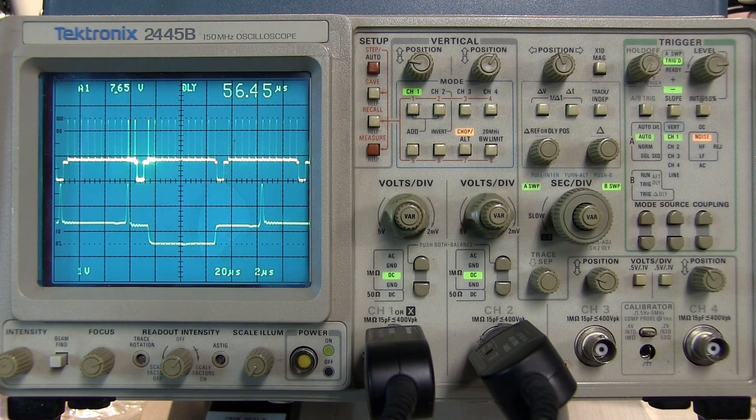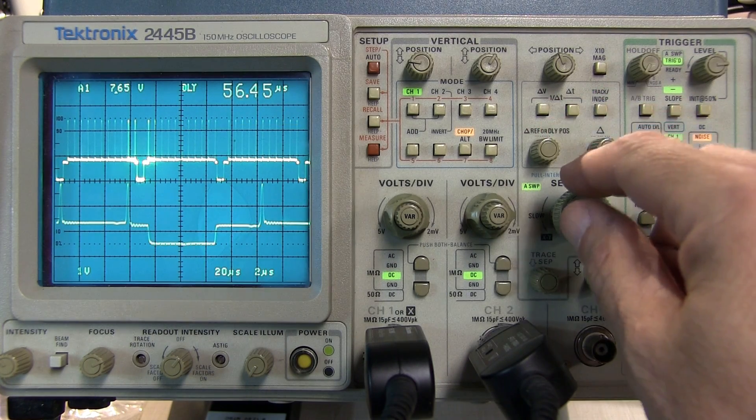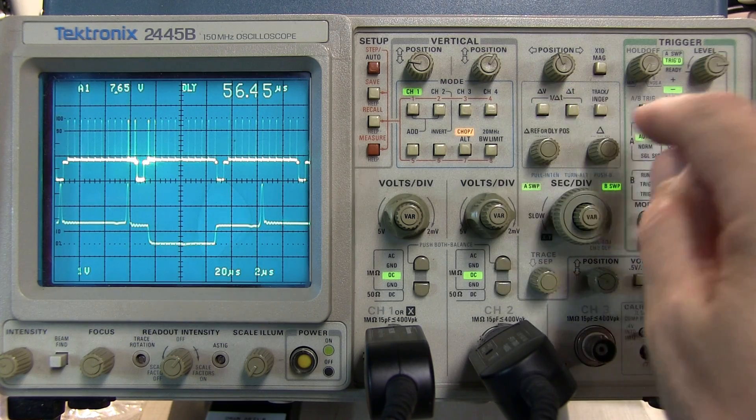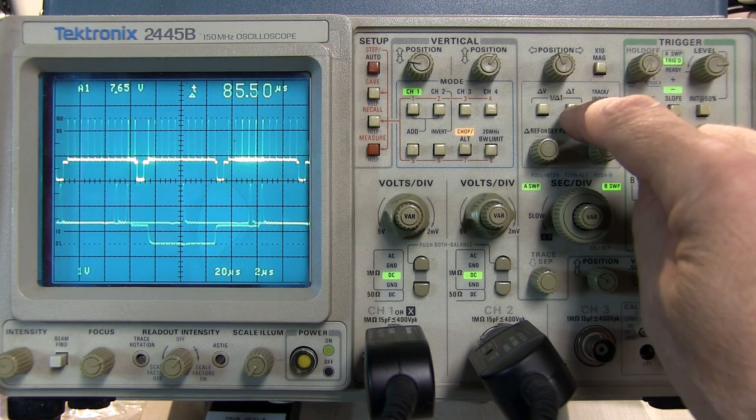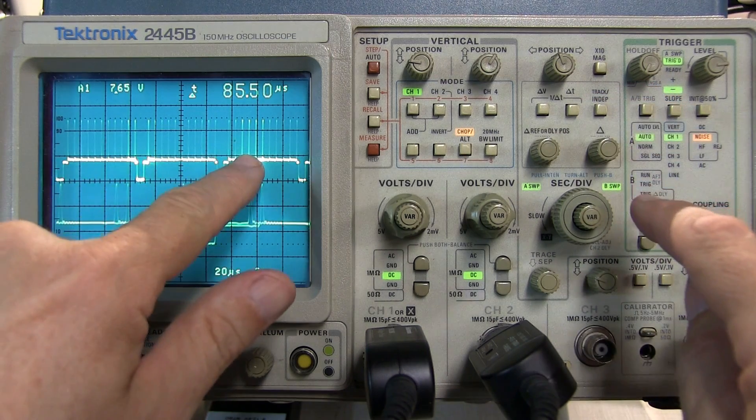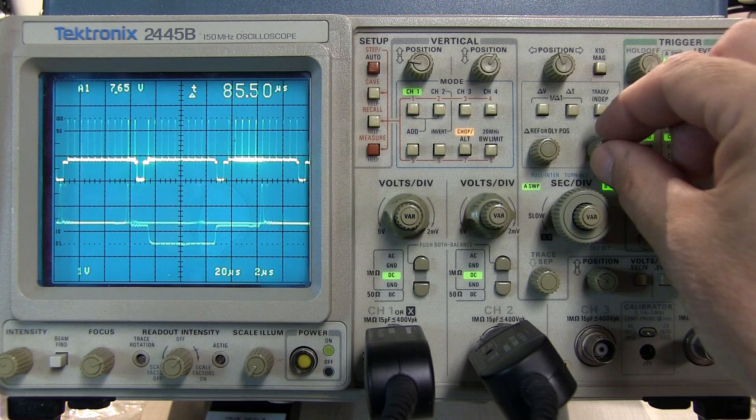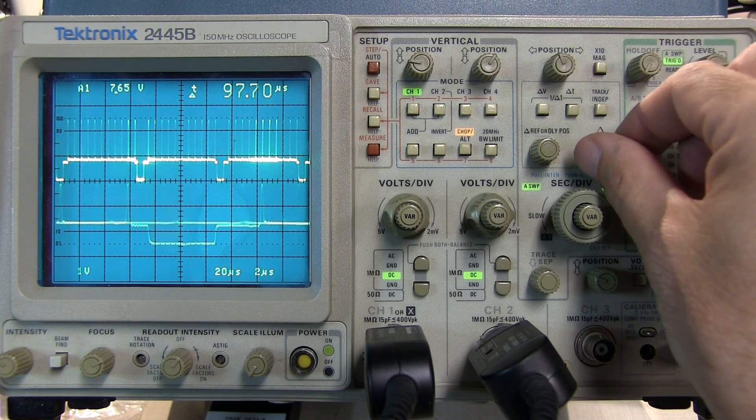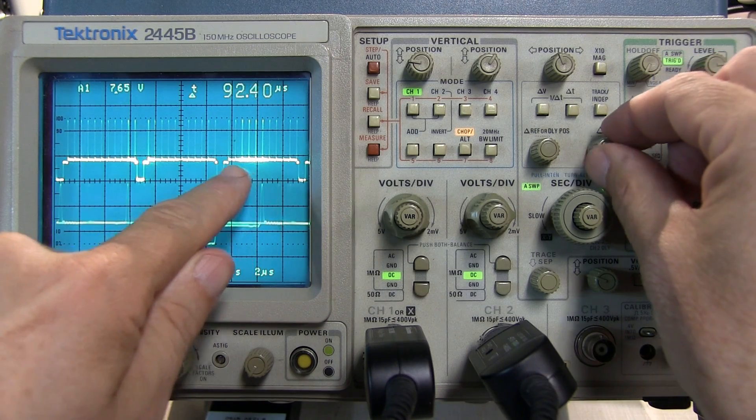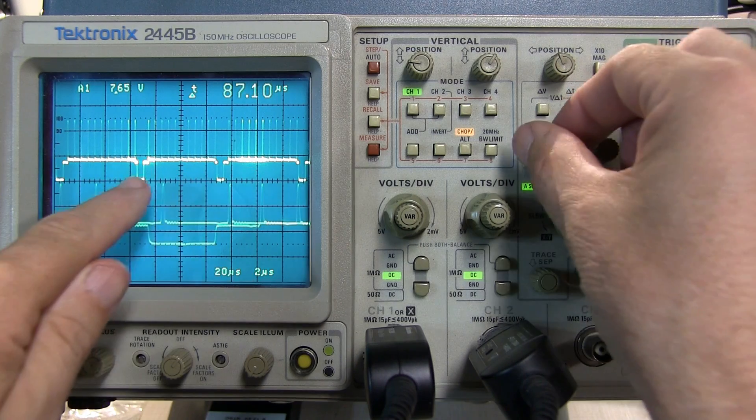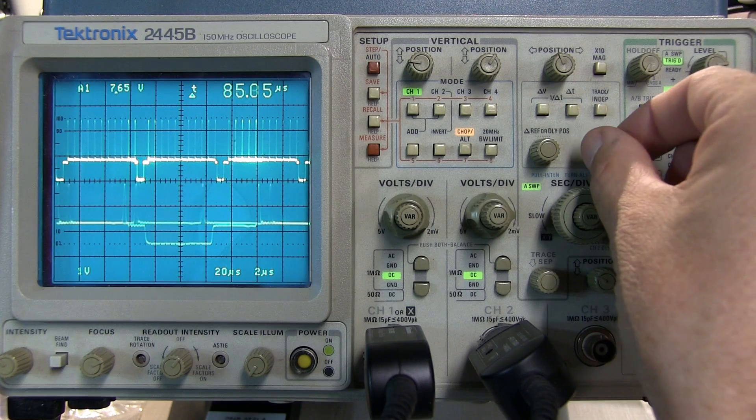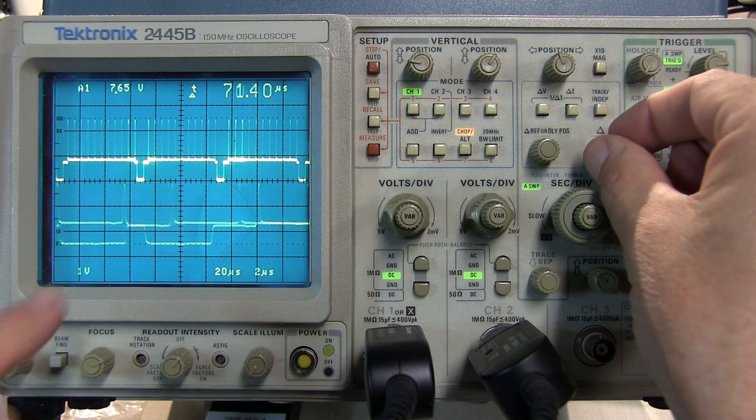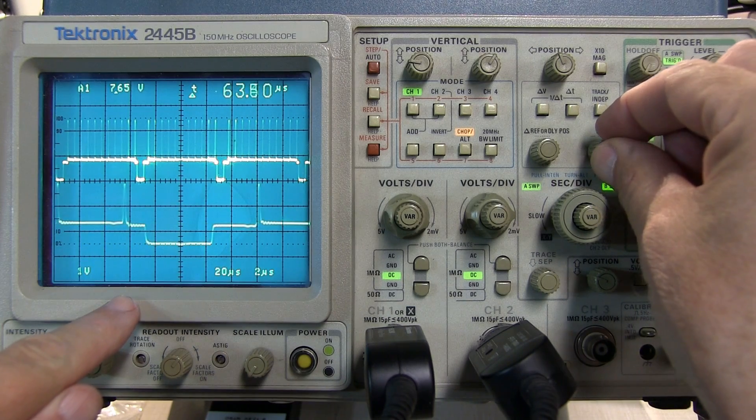Now another interesting feature of the delayed time base on this series of scopes is the Delta function. I can hit the Delta T button here and what that will do is bring up a second highlighted area. If I hit the Delta knob here I can actually see that second area moving back and forth and this is the first area moving back and forth. What this allows me to do is find two spots in a waveform and line them up.